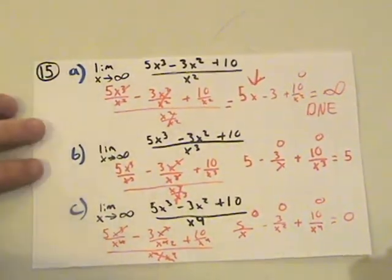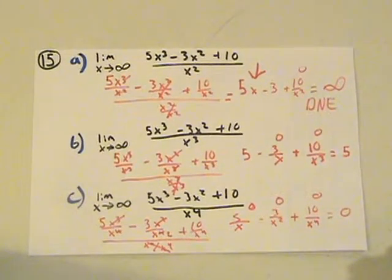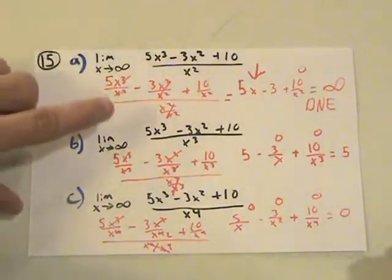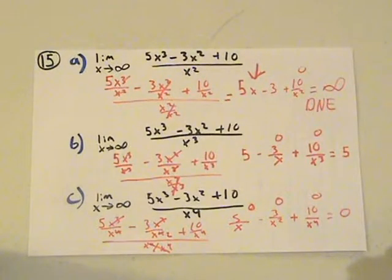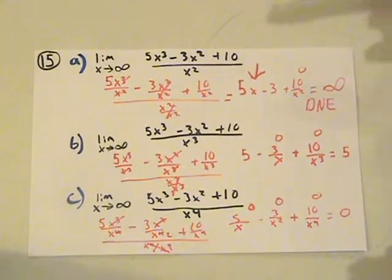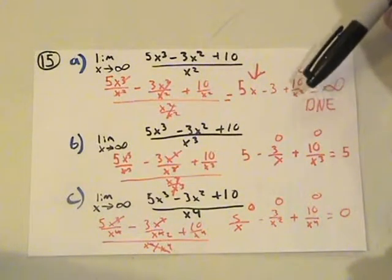So, number 15 of section 5. I've pretty much written everything out to go through it a little easier. It asks us to find the limit of h of x and gives us f of x put over x squared. Each time I simply divided the entire function by the highest power of the denominator. In part A, I divided it out and ended up simplifying to 5x minus 3 plus 10 over x squared.